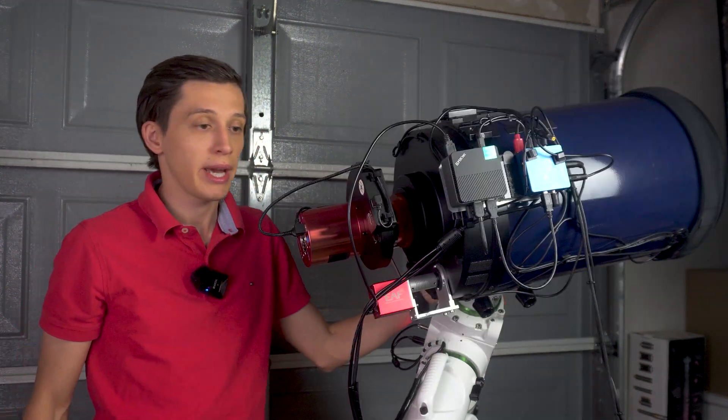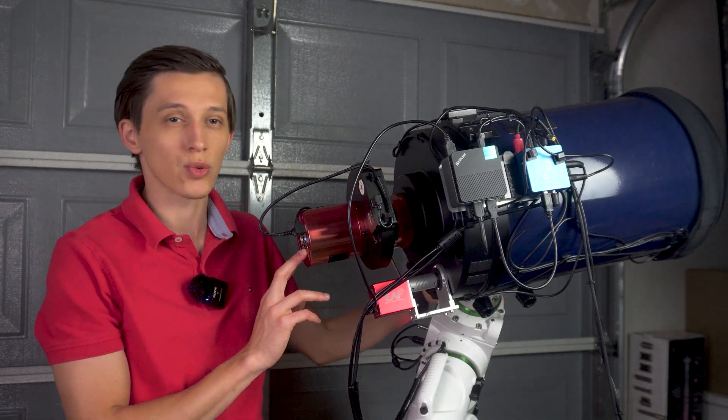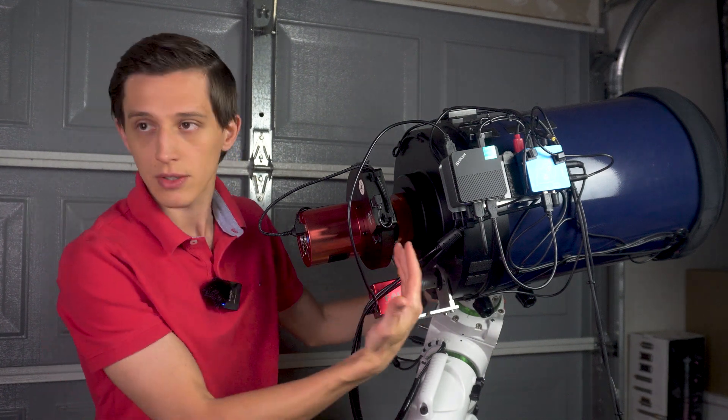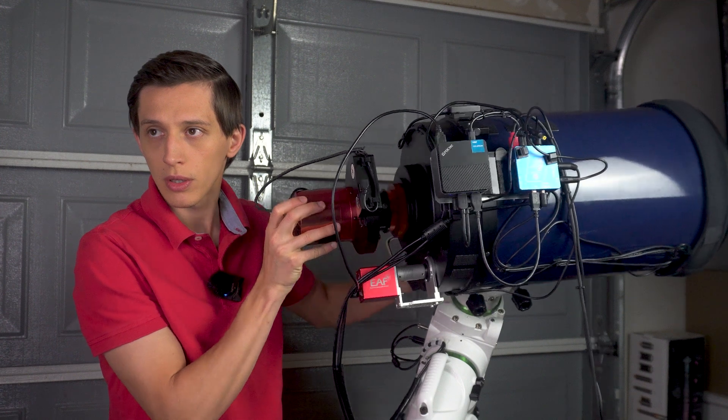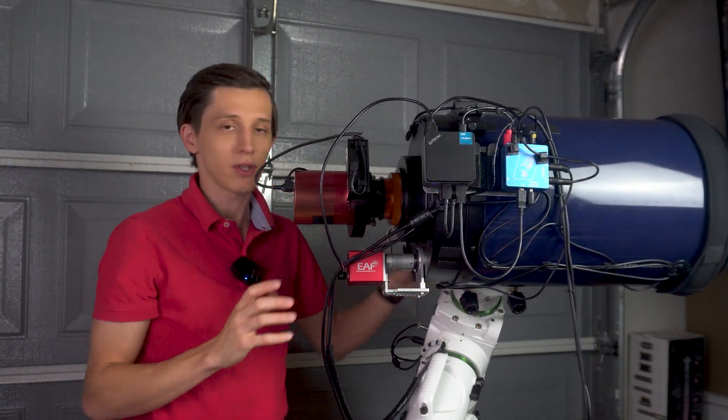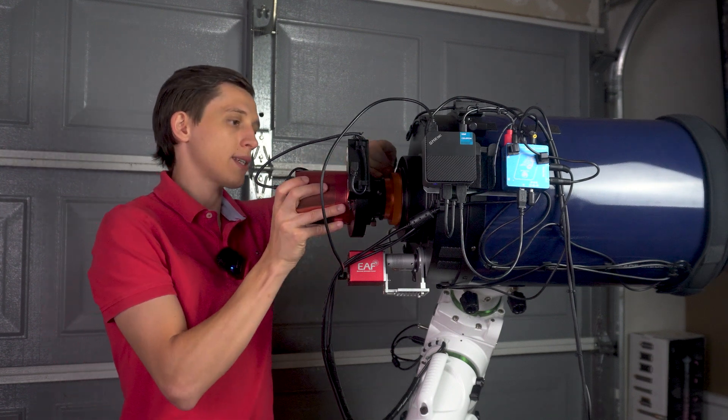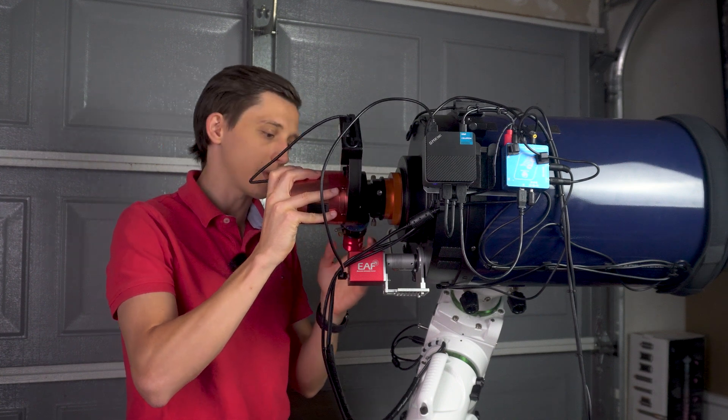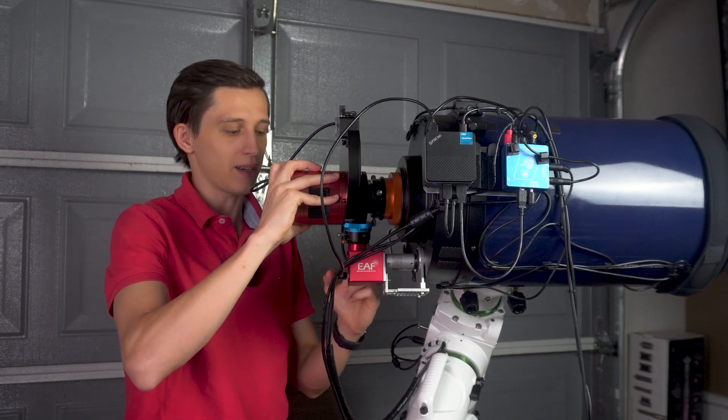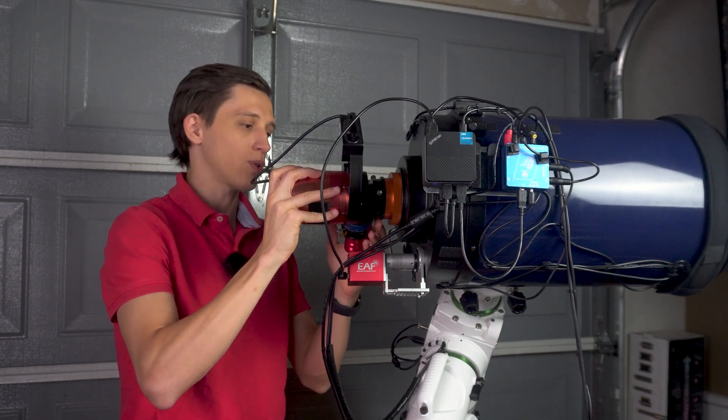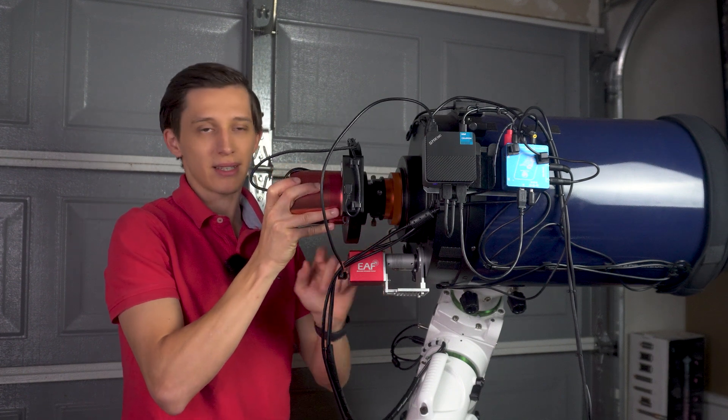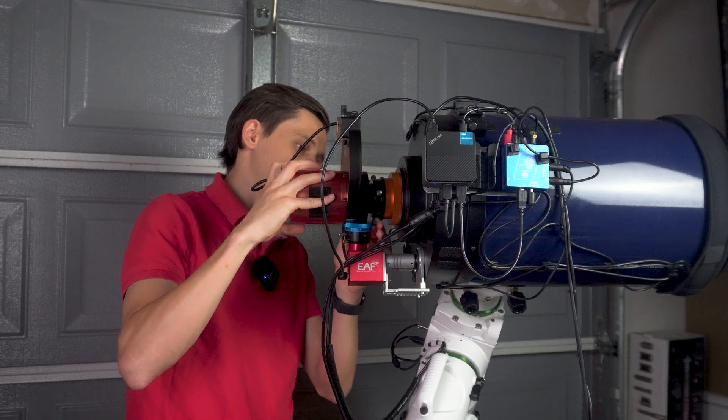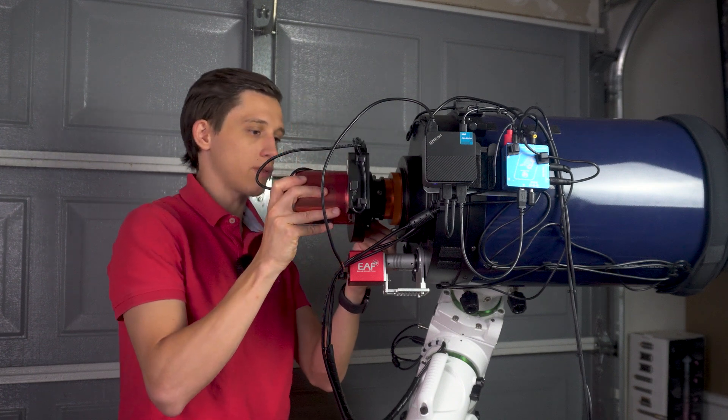Alright, and the only flaw that I have with the current system is I'm a little limited with the possible angles of rotation that I can set for the camera. So, as you can see, this is how everything looks like. If I decide to rotate the camera, on this side I'm limited by the guide camera, and if I go to the other side, then the filter wheel touches the ZWO electronic focuser.